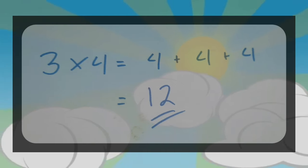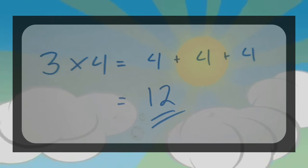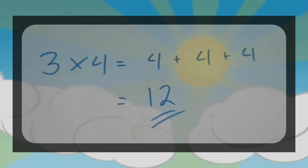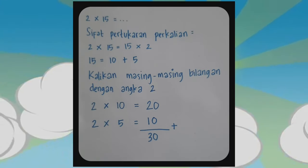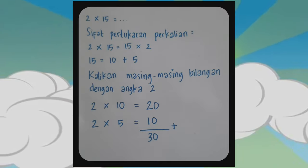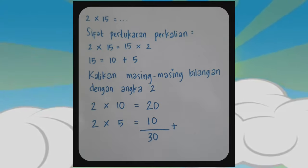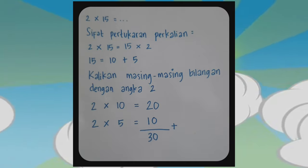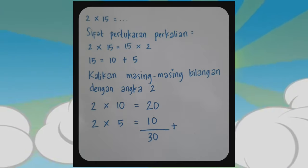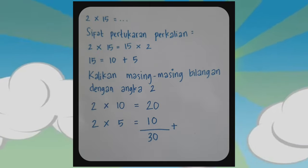Jika ada soal 3 kali 4, maka yang anak-anak jumlahkan 4-nya ya: 4 tambah 4 tambah 4 sama dengan 12. Nah, jangan sampai terbalik ya. Untuk selanjutnya yaitu soal contoh 2 kali 15. Nah, kali ini kita gunakan sifat pertukaran perkalian. 2 kali 15 itu sama dengan 15 kali 2. 15 itu 10 ditambah 5. Kalikan masing-masing bilangan dengan angka 2: 2 kali 10 hasilnya 20, 2 kali 5 hasilnya 10, dan jumlahkan hasilnya 30. Itu menggunakan cara yang panjang, ada juga cara yang pendek.